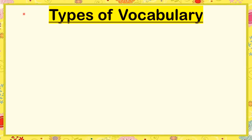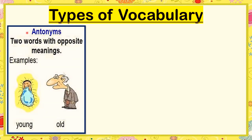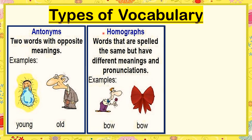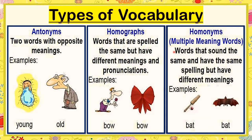Let us discuss the different types of vocabulary one by one. The first one: antonyms — two words with opposite meanings, for example, young and old. The second type: homographs — words that are spelled the same but have different meanings and pronunciation. Next: homonyms — words that sound the same and have the same spelling but different meanings. So as you can see, homographs and homonyms share the same spelling and sound but have different meanings. In homonyms, one word can have so many different meanings.